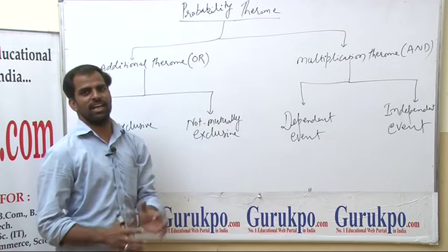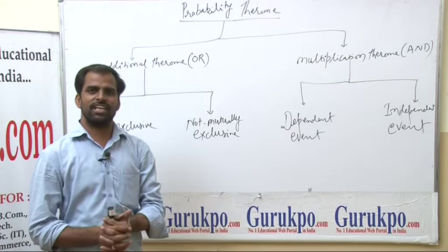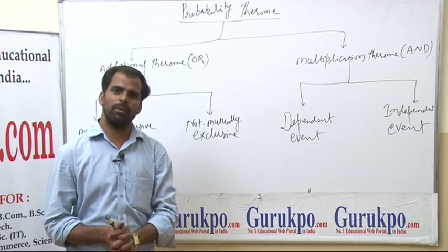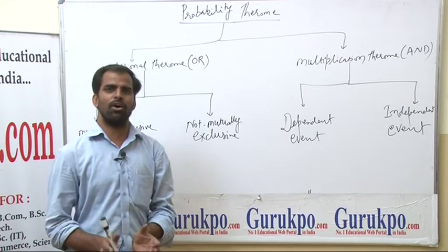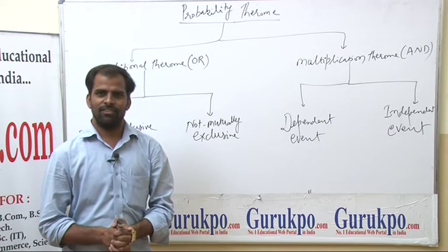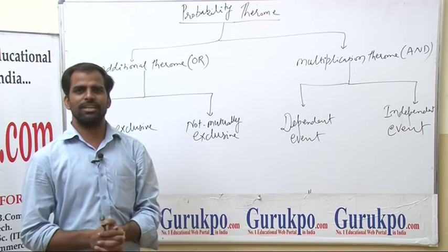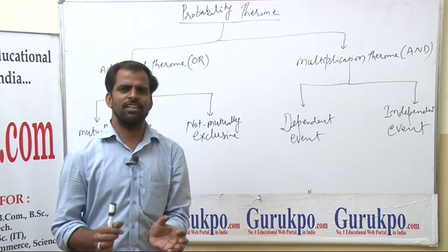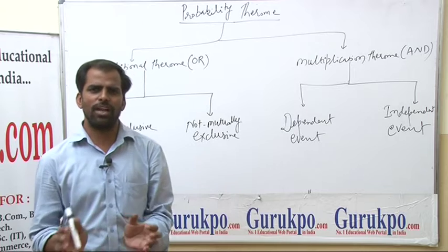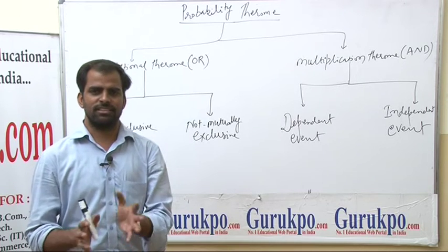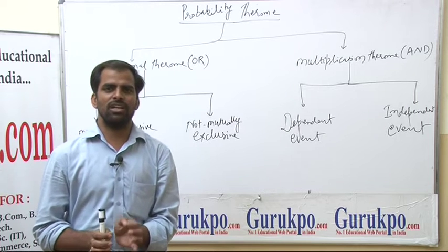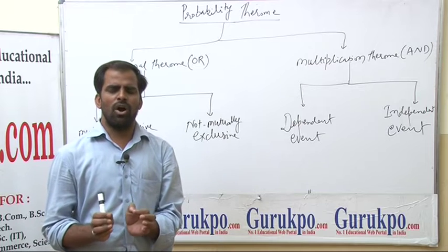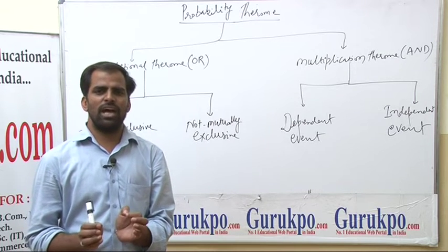Probability kya hai? Kisi bhi ghatna ke ghatit hone ya nahi hone ki sambhavna hi probability hai. Probability is the chance of happening or not happening an event with a calculated risk — jis mein ki aap jokhim ka bhi anuman laga sakte hain. It measures future uncertainty with the help of past experience.